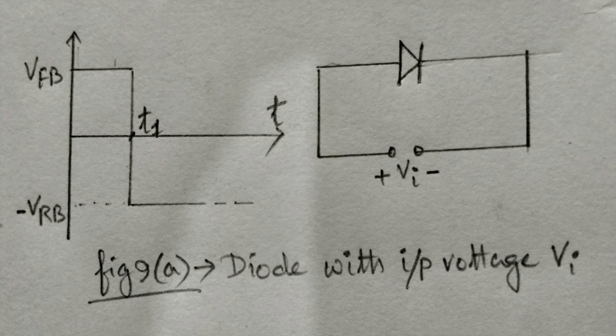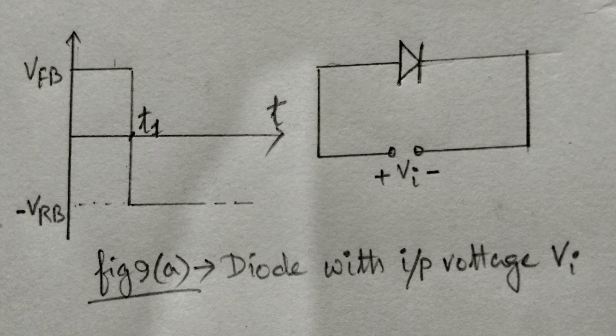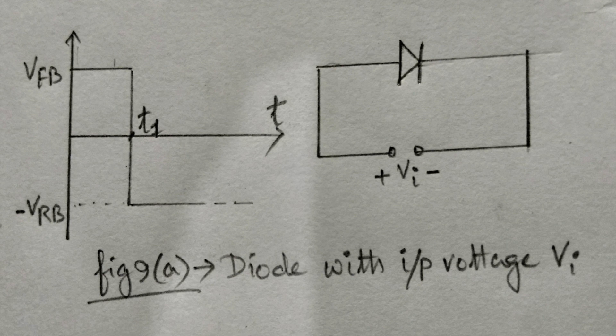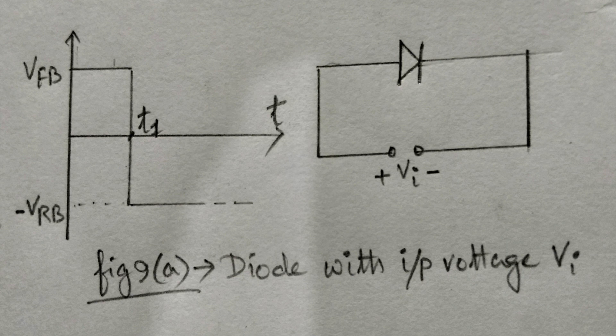So at time T1, when the input signal is changing, or the input voltage polarity is changing, the diode should go to the off state immediately, as per the ideal case.